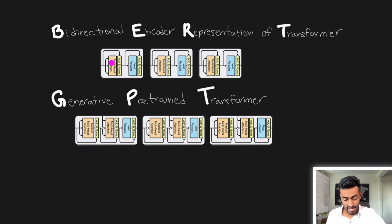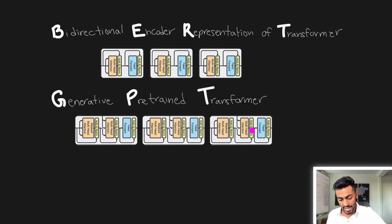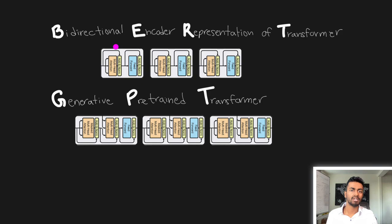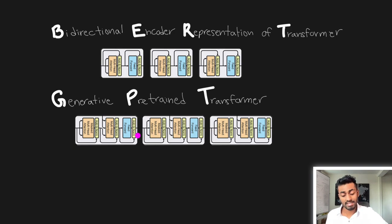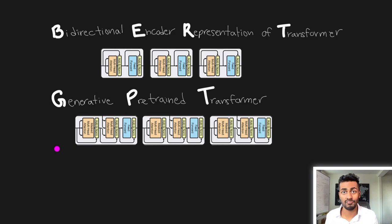If we stack the encoder parts together, we get a Bidirectional Encoder Representations from Transformers, or BERT. If we take the decoder parts and stack them together, we get a Generative Pre-trained Transformer, or GPT. These are popular language models typically pre-trained on general language data and then fine-tuned for specific tasks. ChatGPT is a GPT model fine-tuned to respond to user requests, and further fine-tuned using reinforcement learning.